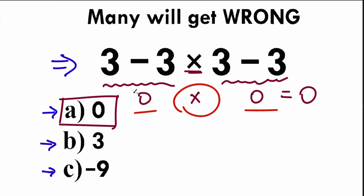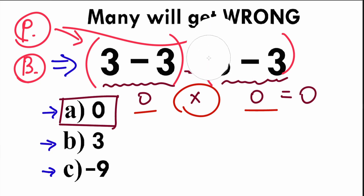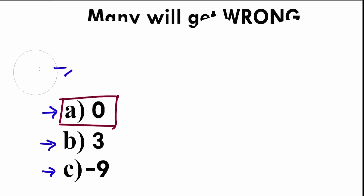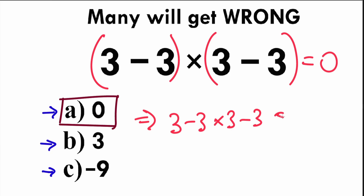Here are a few tricky hints about this question. If we had parentheses right here — (3 minus 3) times (3 minus 3) — then the correct answer would be zero, 100 percent. Because with parentheses, subtraction goes first on both sides, and the last step is multiplication: zero times zero equals zero. Because in terms of PEMDAS, parentheses has the highest priority. But in our case we don't have parentheses, so we have 3 minus 3 times 3 minus 3, which equals minus 9. That is option C.